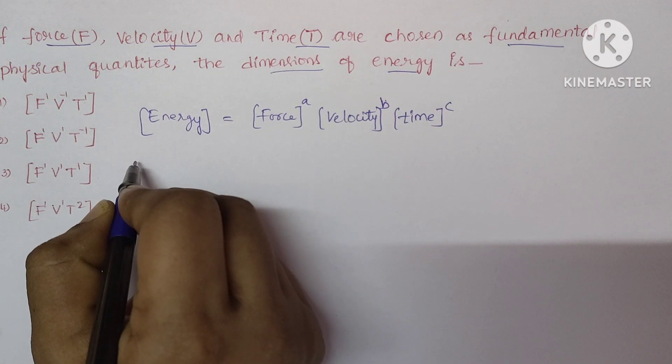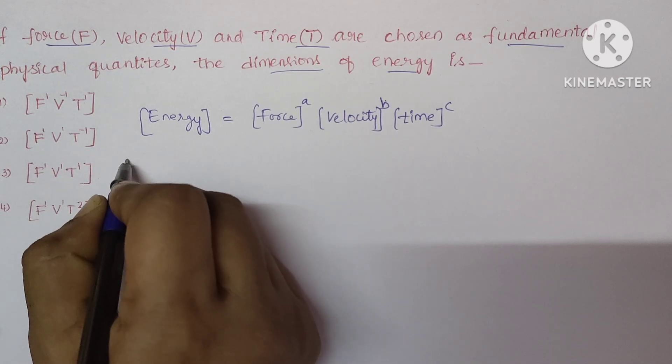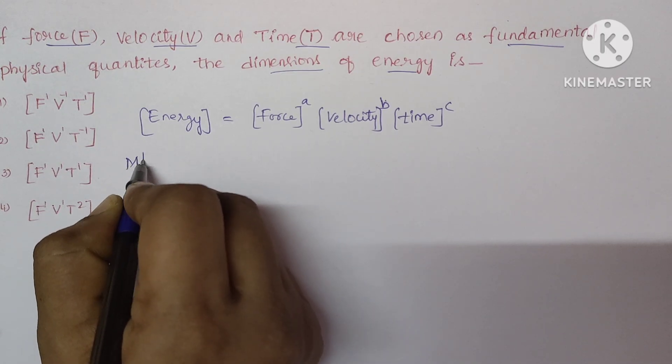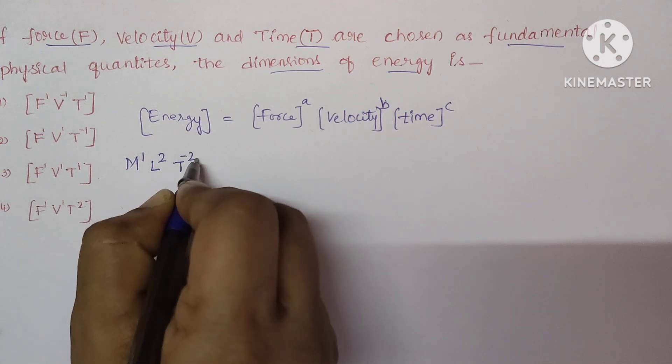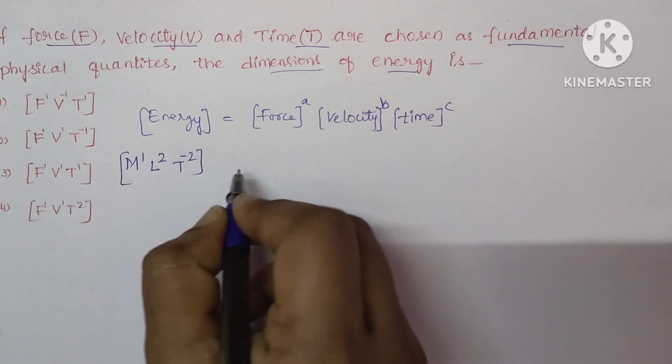Let us try the dimensions of energy here. So that is M power 1, L power 2 and T power minus 2. This is the dimension of formula for energy.